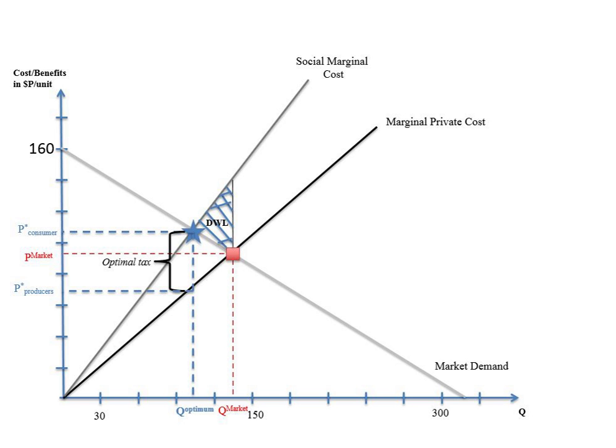Mathematically, social marginal cost is the sum of private marginal cost and the external costs.